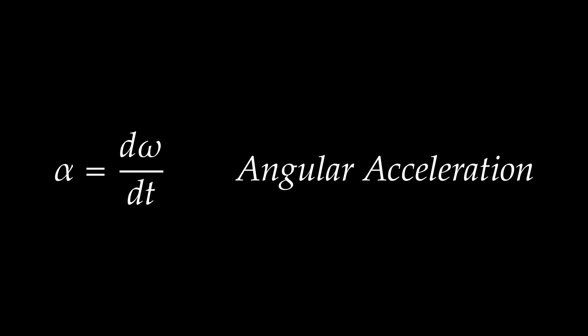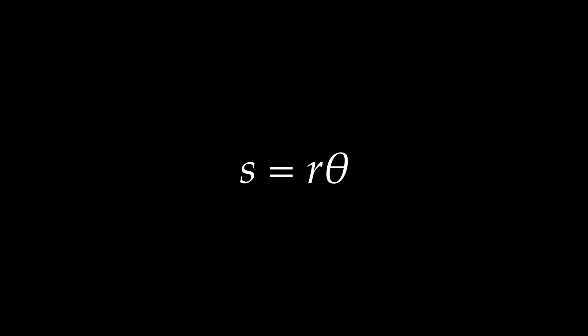The angular quantities are defined exactly the same way as translational quantities, and they are simply related to each other. Since s = rθ, it follows that v = rω and a = rα. The relationship between translational and rotational quantities is proportional to the radius r. You will very often find yourself converting one to the other.